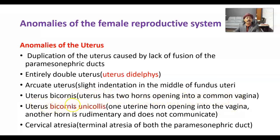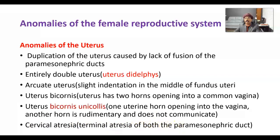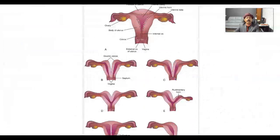Uterus bicornis unicollis has one uterine horn opening into the vagina, while the other horn is either rudimentary or does not communicate with the vagina or with the other horn. Cervical atresia results from terminal atresia of both paramesonephric ducts.